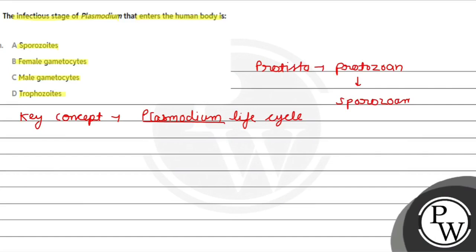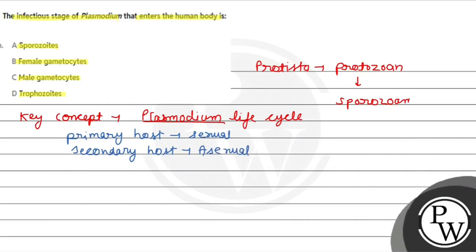Plasmodium life cycle — first of all, you should know the primary host and secondary host. The primary host is the organism where sexual reproduction takes place, and the secondary host is where asexual reproduction takes place. For Plasmodium, sexual reproduction occurs in the vector, which is the Female Anopheles mosquito. Asexual reproduction occurs in the human host.